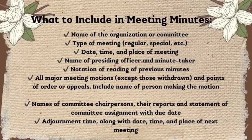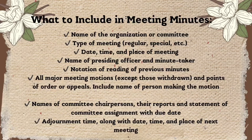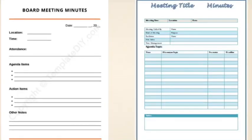Next, the name of the presiding officer should be mentioned. After that, reading of the previous meeting minutes is the next step. The discussions held during the meeting should then be mentioned, followed by the decisions taken in that meeting. Finally, the venue, date and time of the next meeting should be recorded.